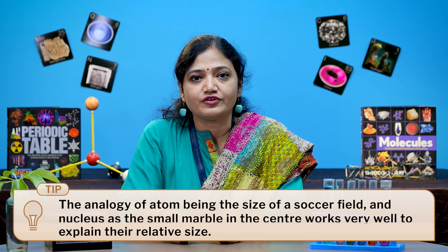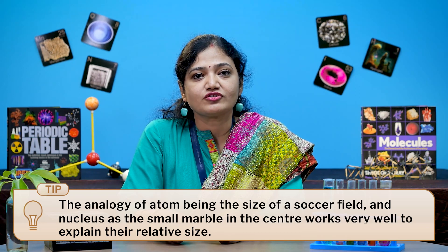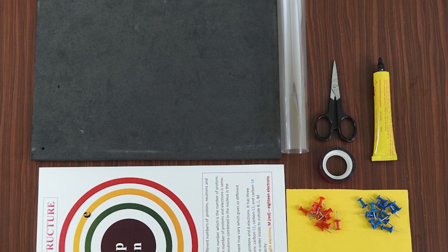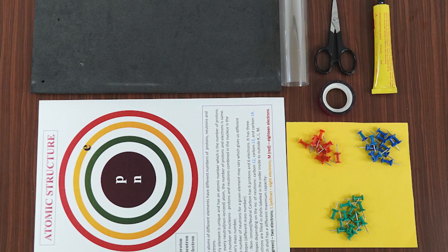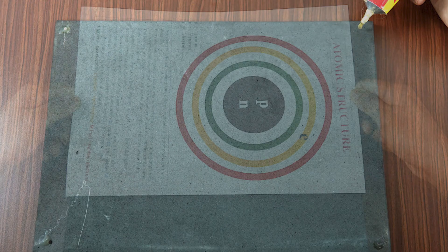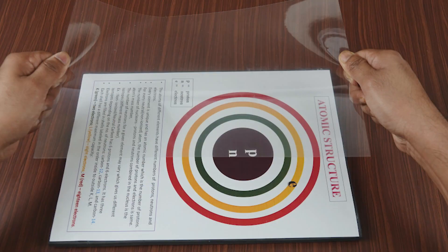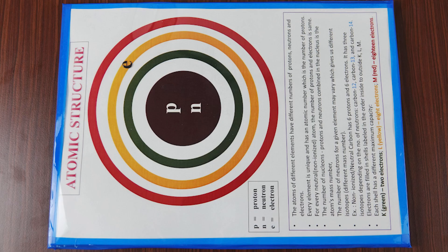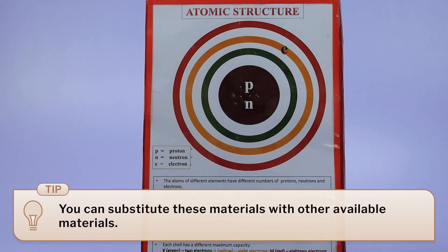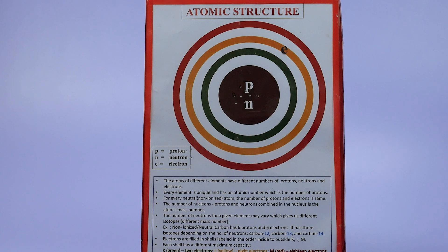I explained the structure of atom and also discussed the electronic configuration of elements. For our next activity, we need plastic sheets, cardboard, colored pins — red, green, blue — and A4 size paper. Paste an A4 size paper on the cardboard to make the cardboard assembly. Now draw five concentric circles with increasing radius on it, to show the nucleus at the center and the four shells named K, L, M, and N around the nucleus, and cover the cardboard with a plastic sheet.